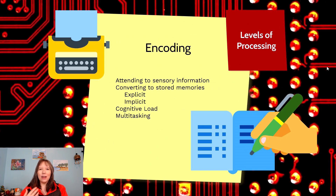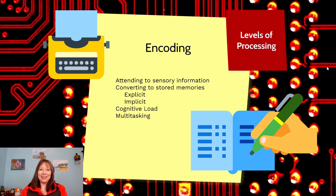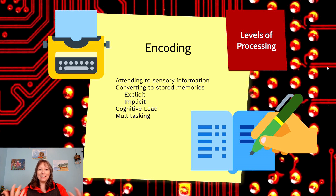By encoding, we mean that you're attending to sensory information and converting it into stored memories. This can happen both explicitly and implicitly. We've talked a lot about explicit and implicit learning and consciousness, and this still holds here. You could be listening to this lecture right now and attempting to remember the content in a very explicit manner — you're actively trying to encode information.